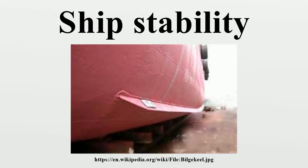Gyro stabilizers consist of a spinning flywheel and gyroscopic precession that imposes boat-righting torque on the hull structure. The angular momentum of the gyro's flywheel is a measure of the extent to which the flywheel will continue to rotate about its axis unless acted upon by an external torque. The higher the angular momentum, the greater the resisting force of the gyro to external torque. A gyroscope has three axes: a spin axis, an input axis, and an output axis. The spin axis is the axis about which the flywheel is spinning and is vertical for a boat gyro.